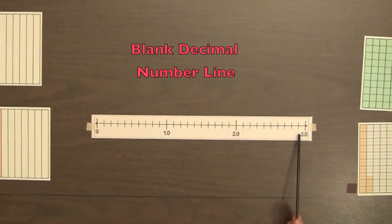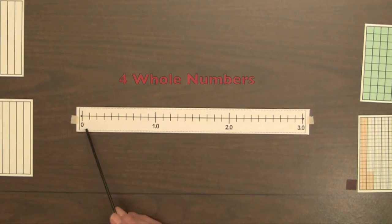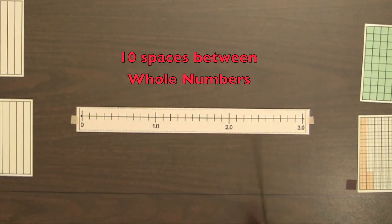This blank decimal number line can be reproduced for students. Students will notice that it has four whole numbers, 0, 1.0, 2.0, 3, and there are ten spaces between each pair of numbers.